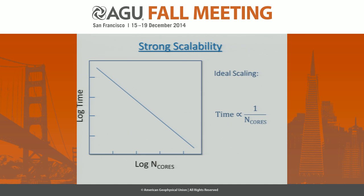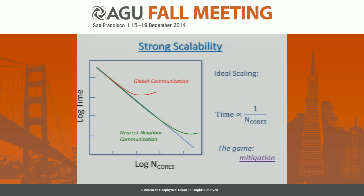In an ideal world, plotting log time versus log number of cores gives a straight line. For finite difference or finite volume methods, you trace this line for several decades before rolling off, because each process only has to communicate with a couple of other processes. However, for spectral methods, which involve global communication, you roll off of this ideal scaling curve much more quickly — that's really the problem.